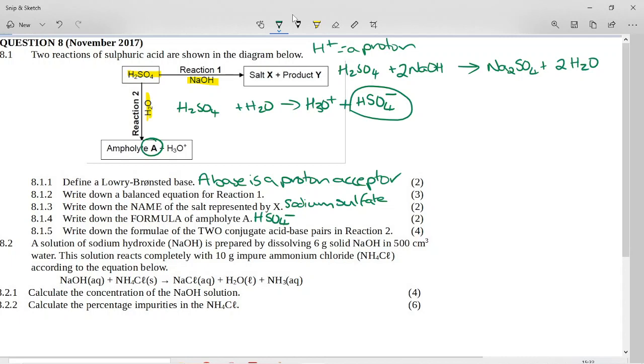Now it says, write down the formulae of two conjugate acid-base pairs in reaction two. So if we want a conjugate acid-base pair, I'm going to write it over here because I need that space for the next part.